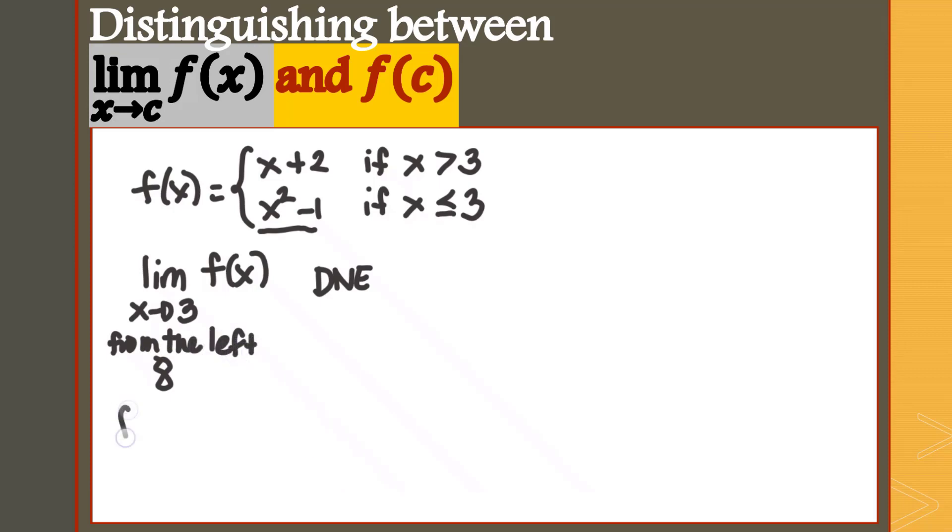The limit from the right uses the second definition. We had their answer for that which is 5. Please review the said video I mentioned earlier. Now, since the limit from the left is not equal from the limit from the right, this was the time when we said that for this specific piecewise function, the limit doesn't exist. That was discussed before.